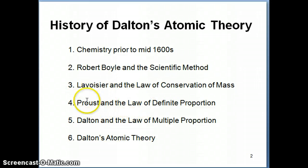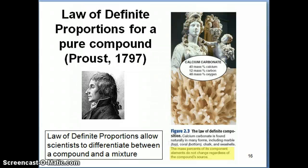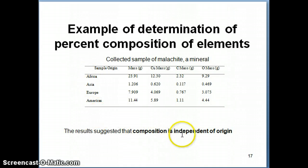We're going to continue our discussion of the different laws that led to the atomic theory, and now we're going to talk about the law of multiple proportion. This is part 5, so we're nearing the end. But first, I want to remind you of the law of definite proportion from the previous video — that if you have the same compound from different sources, you get the same exact composition, the same percent mass of the elements in it.